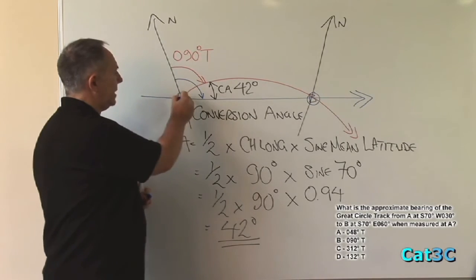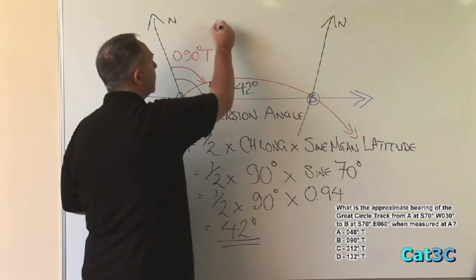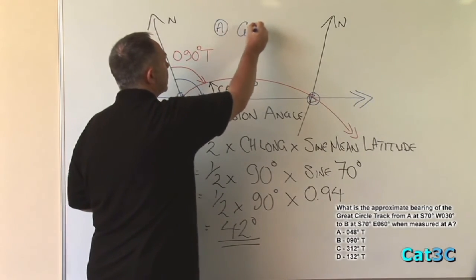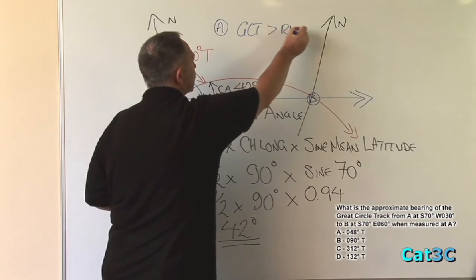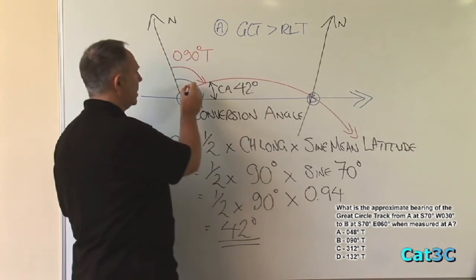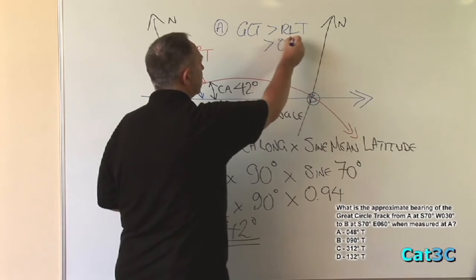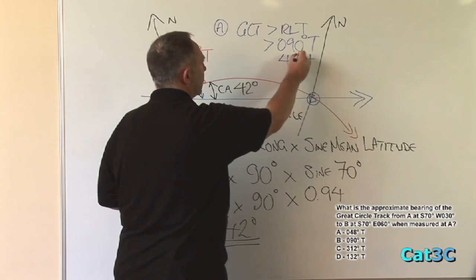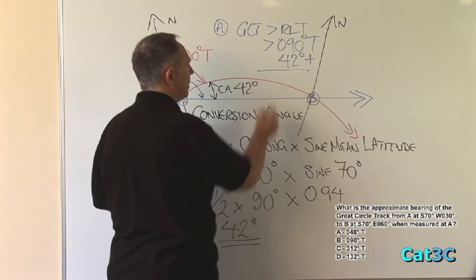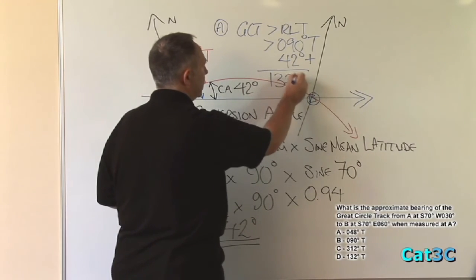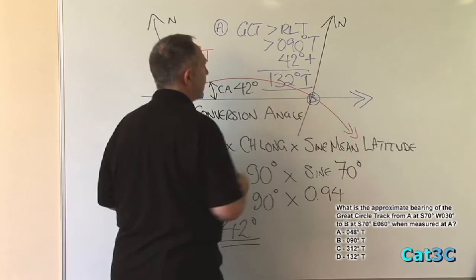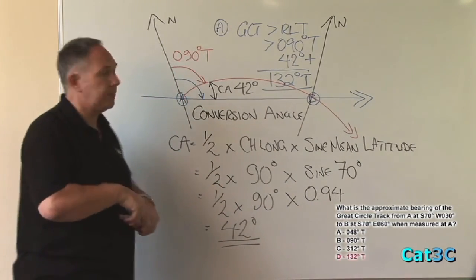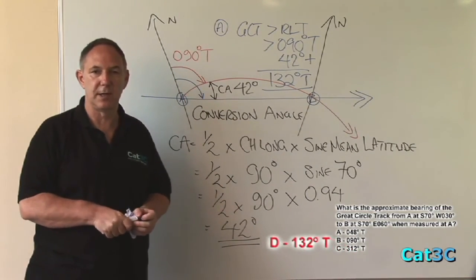As we can see, at A, the Great Circle track is greater than the rhumb line track. That means it is greater than 90 by 42 degrees, given a final answer of 132 degrees true. So our final solution is 132 degrees true, option D.